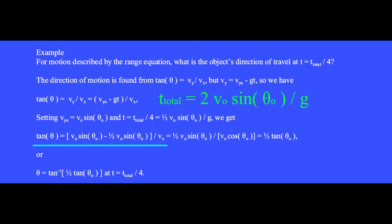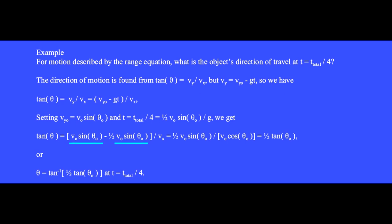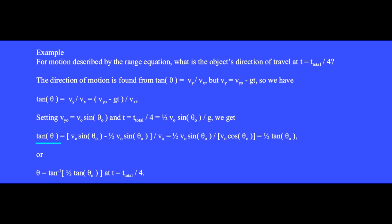So we get tan theta equals v zero sine theta zero minus one half of v zero sine theta zero. These two quantities are the same, so we factor out (1 minus one half) to get one half. We now have one half v zero sine theta zero divided by v sub x, which is v zero cosine theta zero. Since sine divided by cosine is tan, and the v zeros cancel, we have tan theta equals one half tan theta zero when one quarter of the total flight time has occurred. In another problem, you'll find the direction of travel when t is three quarters of the total time.